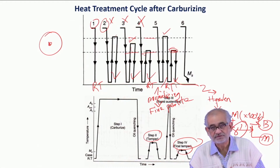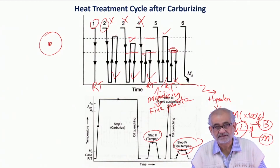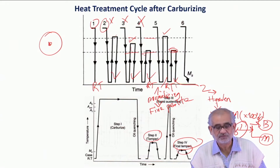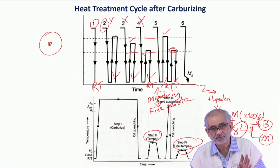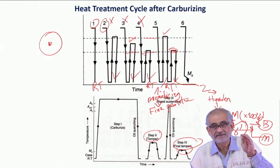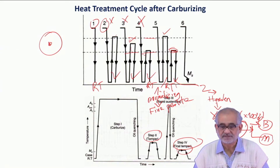Then we can talk about all the improved mechanical properties. But the core, since it is at 0.2 percent, we need to heat above AC3 and then air cool - which is normalizing - to get fine pearlitic microstructure.